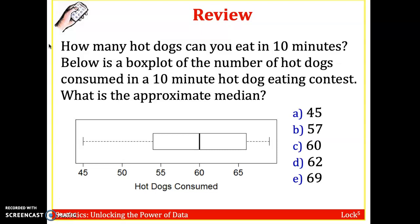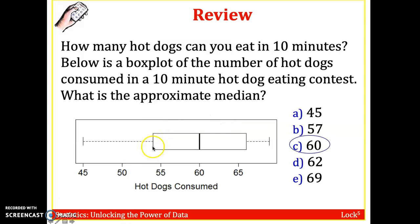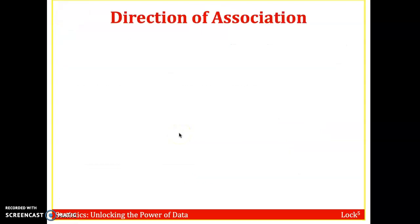Quick review question: if you're given a box plot of the number of hot dogs consumed in a 10-minute hot dog eating contest, what is the approximate median? The answer is 60 — the black center line of the box plot is at 60. About 50% of the contestants ate between 54 and 66 hot dogs. The center box gives you the middle 50%.